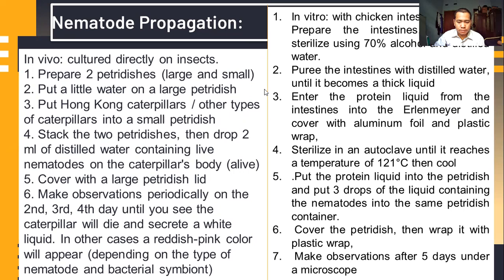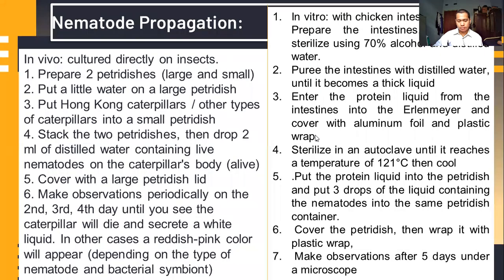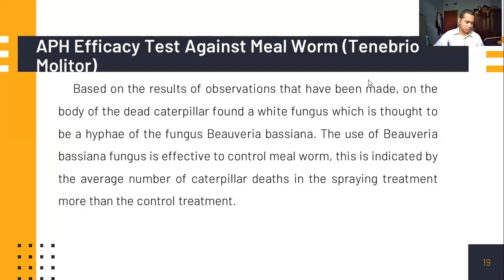For the in vitro method using chicken intestine protein, first prepare and wash the intestines, then sterilize using 70% alcohol and distilled water. Purée the intestines with distilled water until it becomes a thick liquid. Transfer the protein liquid from the intestines into a container and cover with aluminum foil and plastic wrap. Sterilize in an autoclave until it reaches 121 degrees Celsius, then cool down. Put the protein liquid into a petri dish, add three drops of liquid containing nematodes, cover and wrap with plastic wire. Make observations after five days under a microscope.